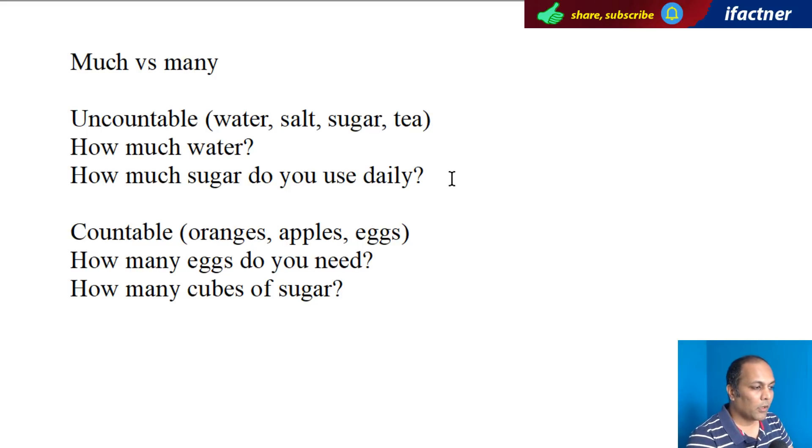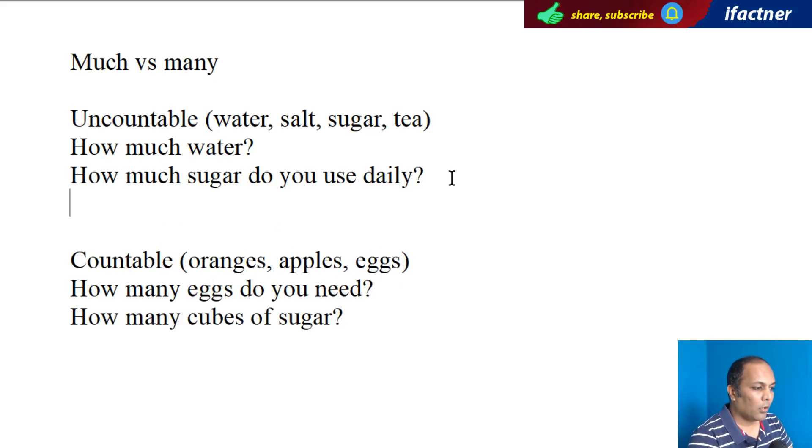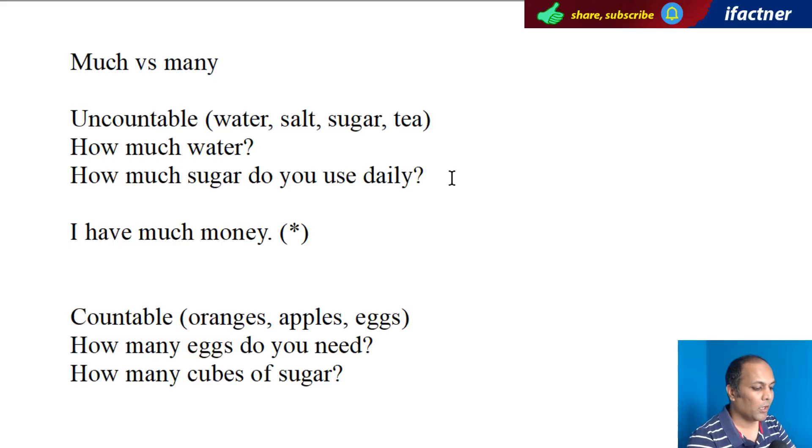Isi tarha, basically agar to, humnay affirmative form mein use karna hai, to hum ta pa, affirmative form mein, hum much use nahin kerthay. Jis tarh mein yeh nahin kaunga, I have much money. Ki mein aapas kaafi paise hain. Toh, yeh joh hai, gulat form hai. Iske bajay hai, hum use karayenge, I have a lot of money. Toh, a lot of, ya lots of, hum use kar sakte hain. I have lots of money.